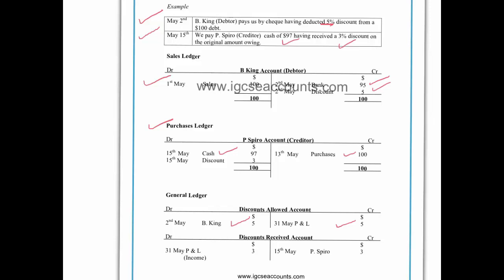Again, in the same way as with the debtor, the creditor account is going to have $100 that we owe Spiro on the credit side, but on the debit side there is only $97. So to balance this account we need to enter the discount received of $3 on the debit side and then post it to the credit side of our discount received account. It's on the credit side because it's a revenue, and it's posted to the profit and loss section of our income statement underneath gross profit as an additional income — in other words, it's a bonus or something extra that we have received.